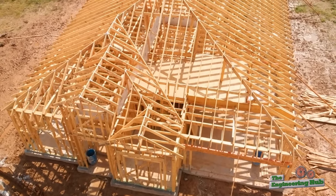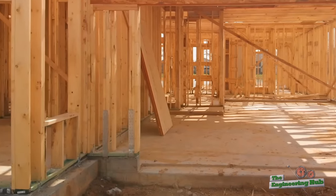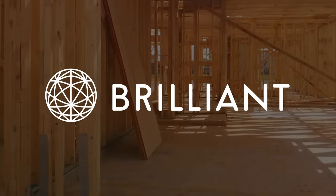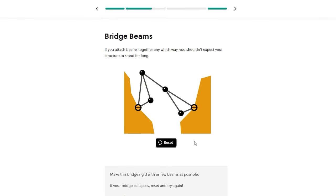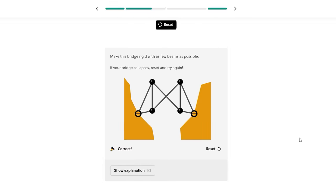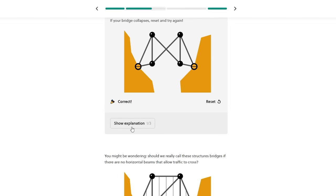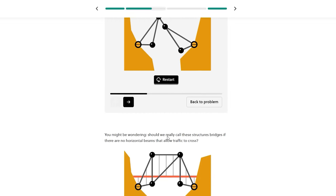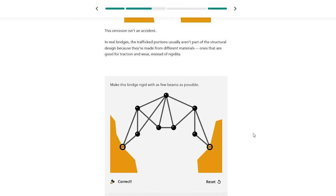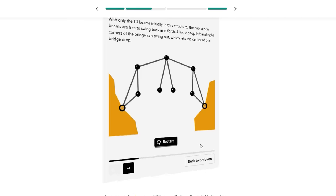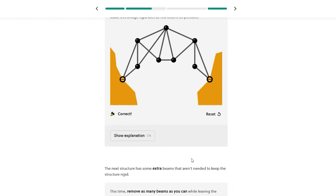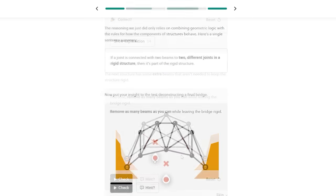If you found the explanations in this video interesting and intuitive, there is a good chance that you would also enjoy Brilliant. Brilliant is an interactive learning platform that helps you grasp complicated STEM topics through intuitive explanations and hands-on lessons. Engineering is really about an intuitive understanding of everyday phenomena. The courses at Brilliant are designed with exactly that purpose. They will help you develop a mindset of an engineer that will enable you to identify STEM applications in the real world.